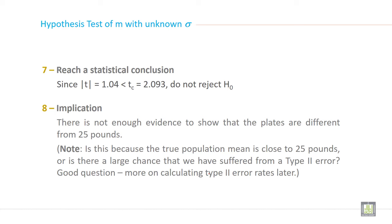Now step 7: write your statistical conclusion. Since |t| = 1.04 and it is less than the table value 2.093, do not reject the null hypothesis.